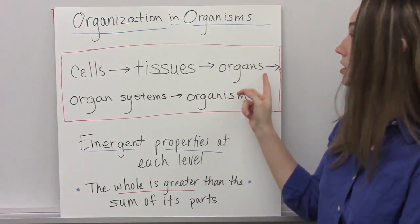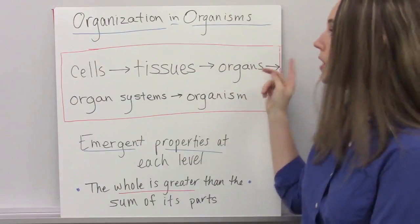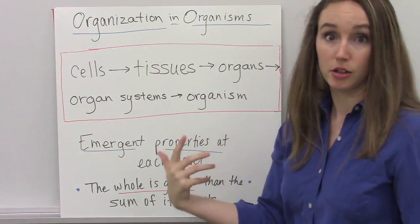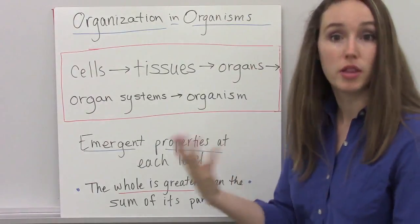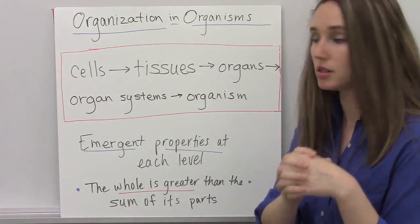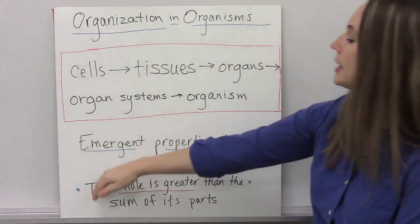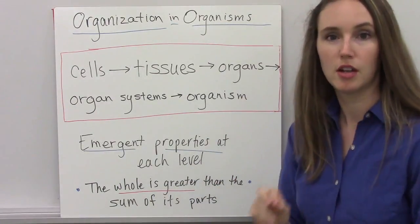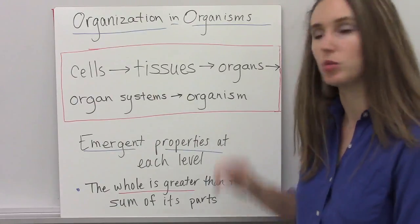And the brain can't actually make your body do anything without all the other peripheral nerves and your spinal cord within your body. That's your nervous system. So the big idea here: the whole is greater than the sum of its parts. Let's look at an example in animals.